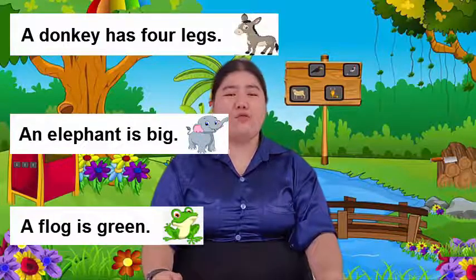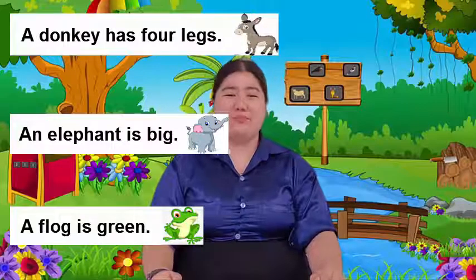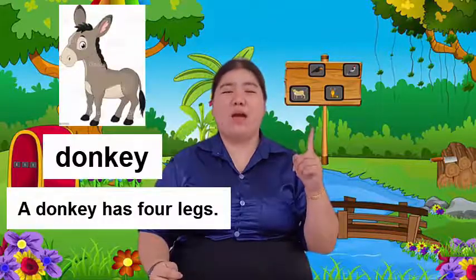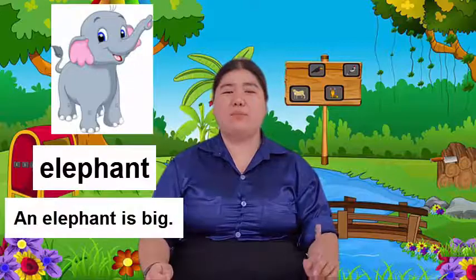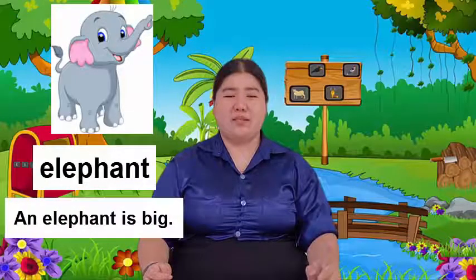A Frogs is green. ต่อไปการบ้านของเราในวันนี้นะคะนักเรียน ครูอยากให้นักเรียนเลือกคำศัพท์มา 1 คำ วันนี้เราเรียนไป 3 คำ คือ Donkey, Elephant, Frogs และให้นักเรียนพูดประโยคที่ครูยกตัวอย่าง ถ้าเลือก Donkey ให้พูด A Donkey has four legs. ถ้าเลือก Elephant ให้พูด An Elephant is big. ถ้าเลือก Frogs ให้พูด A Frogs is green.